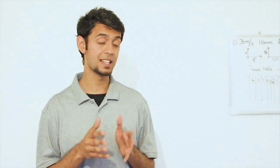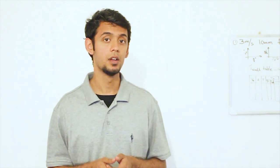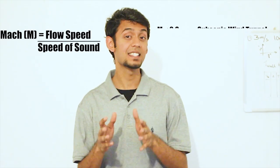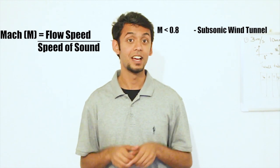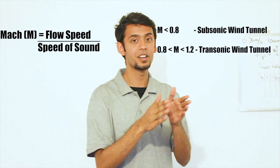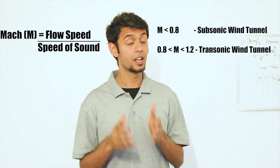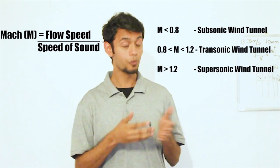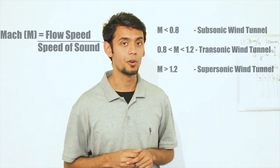Wind tunnels are classified based on their speed of operation and the test section size. For the speed of operation, the classification is done based on Mach number. If the Mach number of the flow is less than 0.8, the wind tunnel is considered subsonic. If the Mach number lies between 0.8 and 1.2, it's considered transonic. And supersonic wind tunnels are tunnels where the velocity of the fluid is above Mach 1.2, meaning at least 1.2 times the speed of sound.